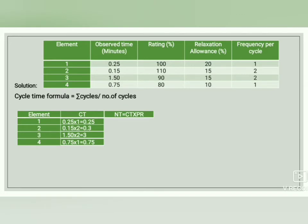From cycle time, we find normal time. The normal time formula is: cycle time × performance rating. For element 1, cycle time is 0.25 and performance rating is 100% (i.e., 1.0), so normal time = 0.25. For element 2, cycle time is 0.3 and performance rating is 110% (1.10), so normal time = 0.3 × 1.1 = 0.33.